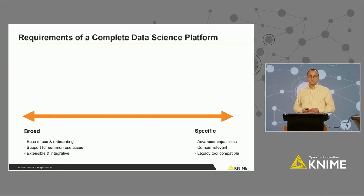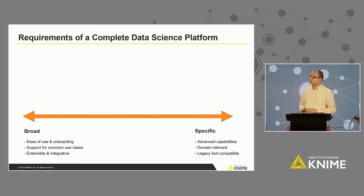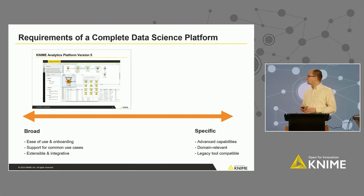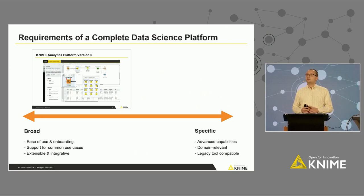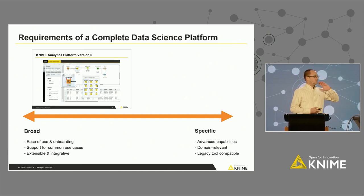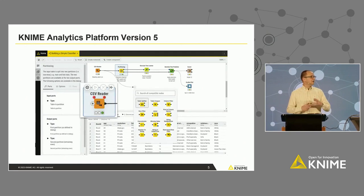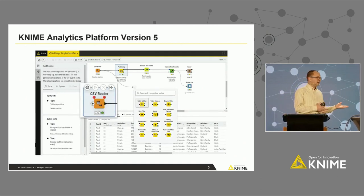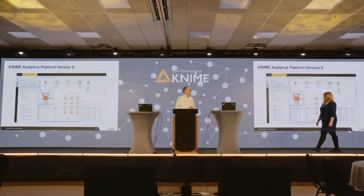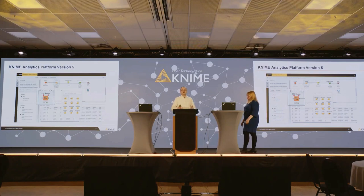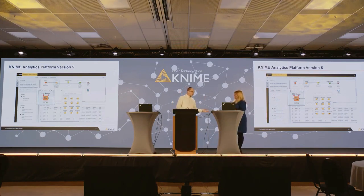We'd like to split this presentation into three parts, starting with the data science platform — the analytics platform. We are going to start with the KNIME Analytics Platform 5. It's an early access version that we released just last month. We have Iris to actually do this because Iris can do this much better than I. Iris is working at KNIME in a team called the data team. They analyze all sorts of data that we use internally: user data, forum data, CO2 data, etc., and Iris is going to show us what AP5 looks like.